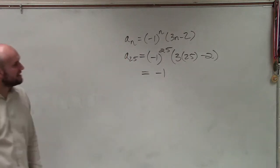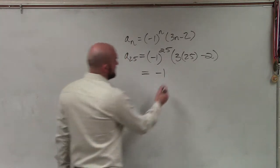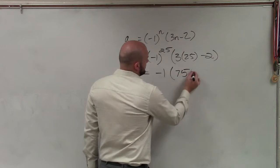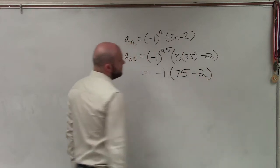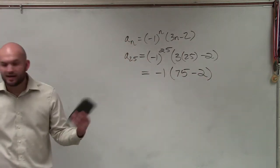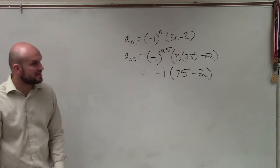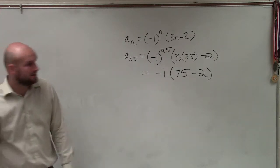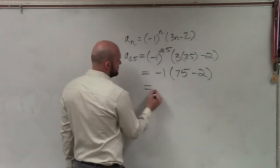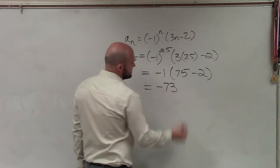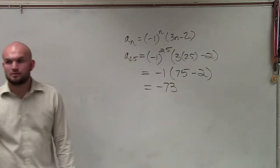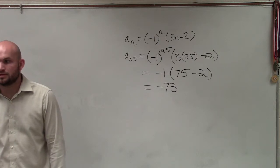And then we have 3 times 25 is going to be 75 minus 2. And then I can just follow my order of operations. 75 minus 2 is going to be 73, times negative 1 is negative 73. Okay. Are we good?